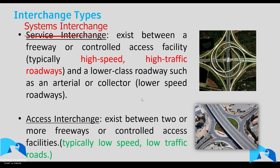A service interchange has a higher level of service because cars don't have to stop. Most service interchanges — for example, consider the roundabout — require you to stop before entering, and there's most likely a give-way. A systems interchange has a higher level of service so cars making different maneuvers can continue moving at high speeds.